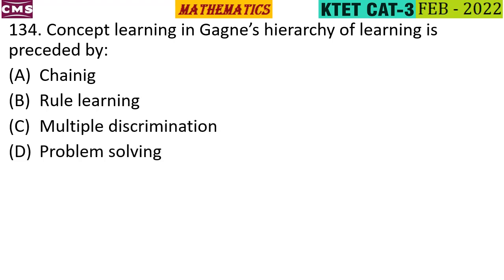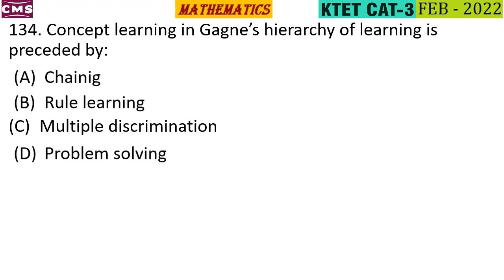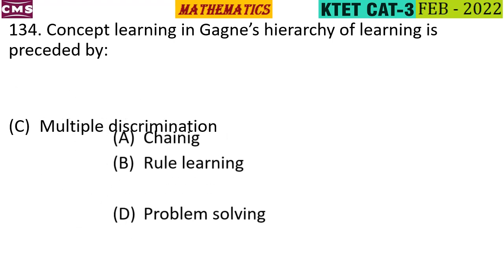In Gagne's hierarchy of learning, concept learning is preceded by which of the following? The options are: chaining, role learning, multiple discrimination, and problem solving. The correct answer is option C — multiple discrimination.